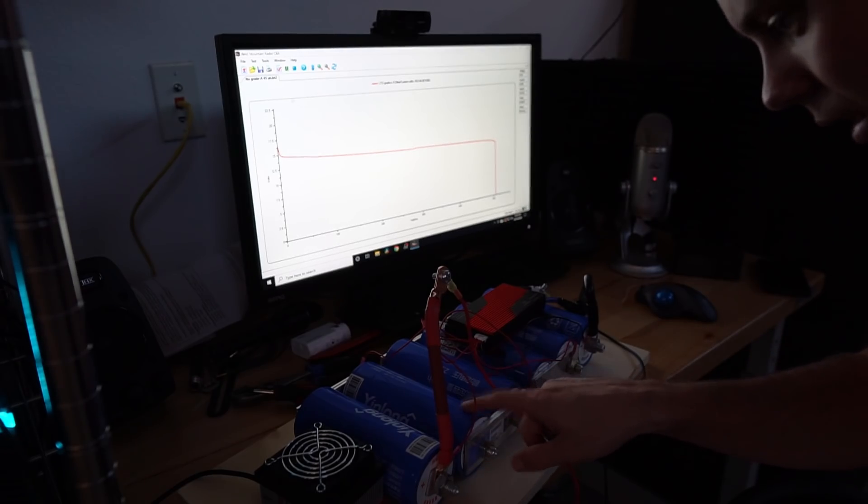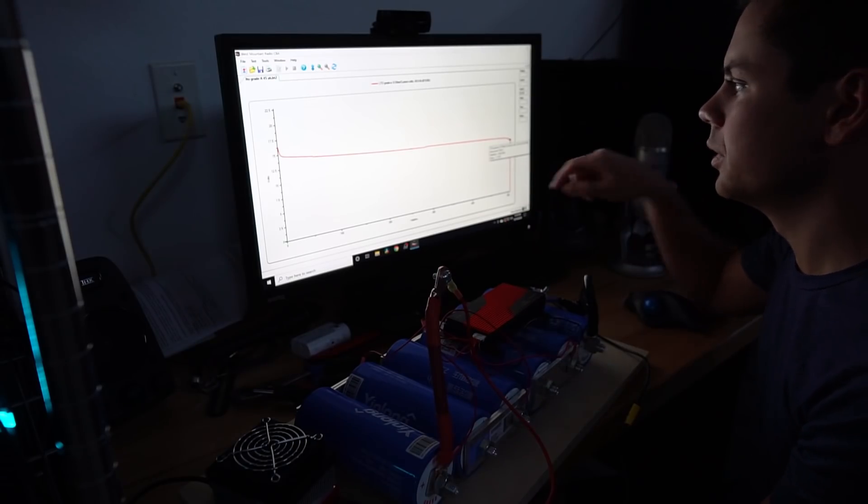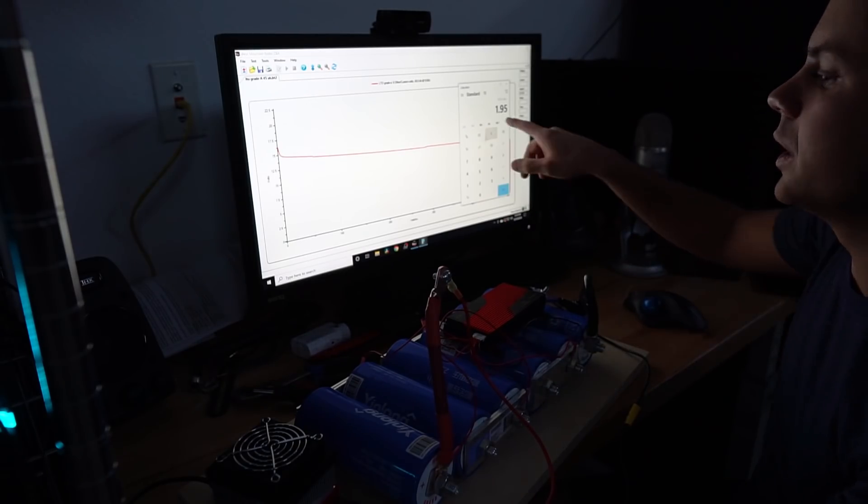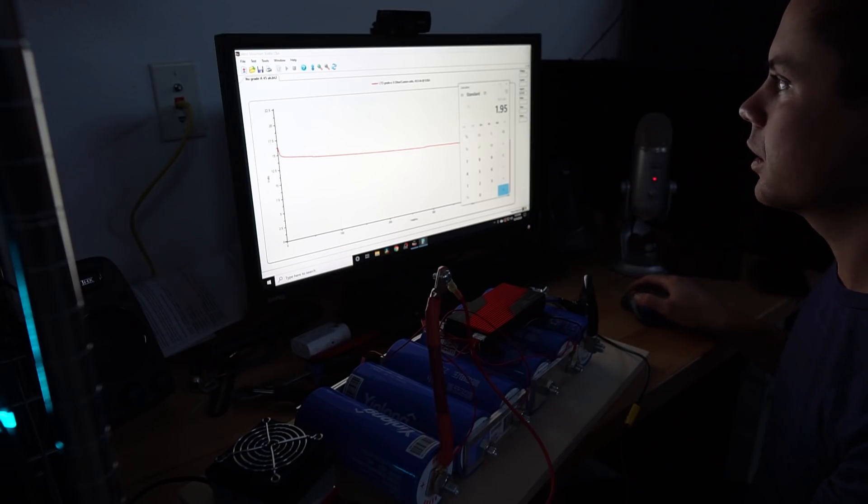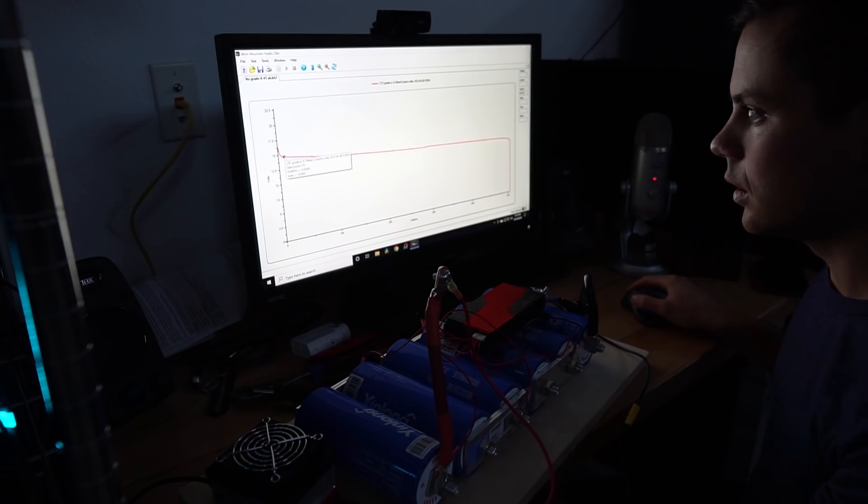The voltage dropped off at 11.7 volts, which is 1.95 volts per cell. So I think this is actually an accurate test. That's not good.